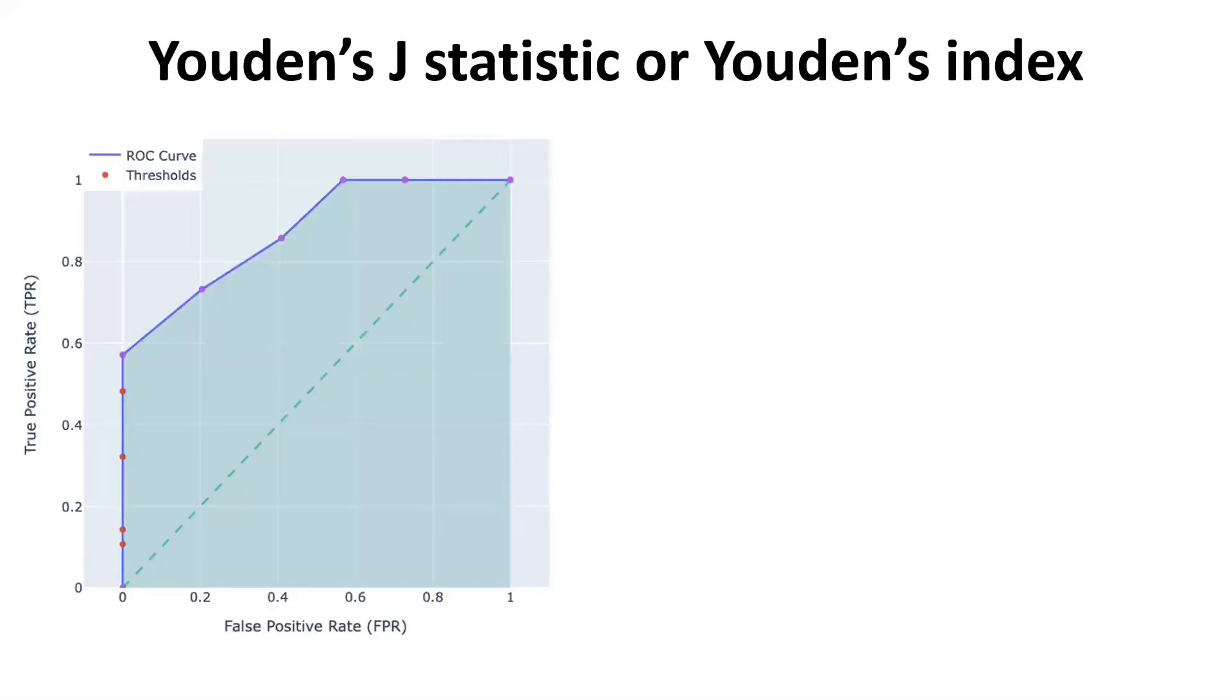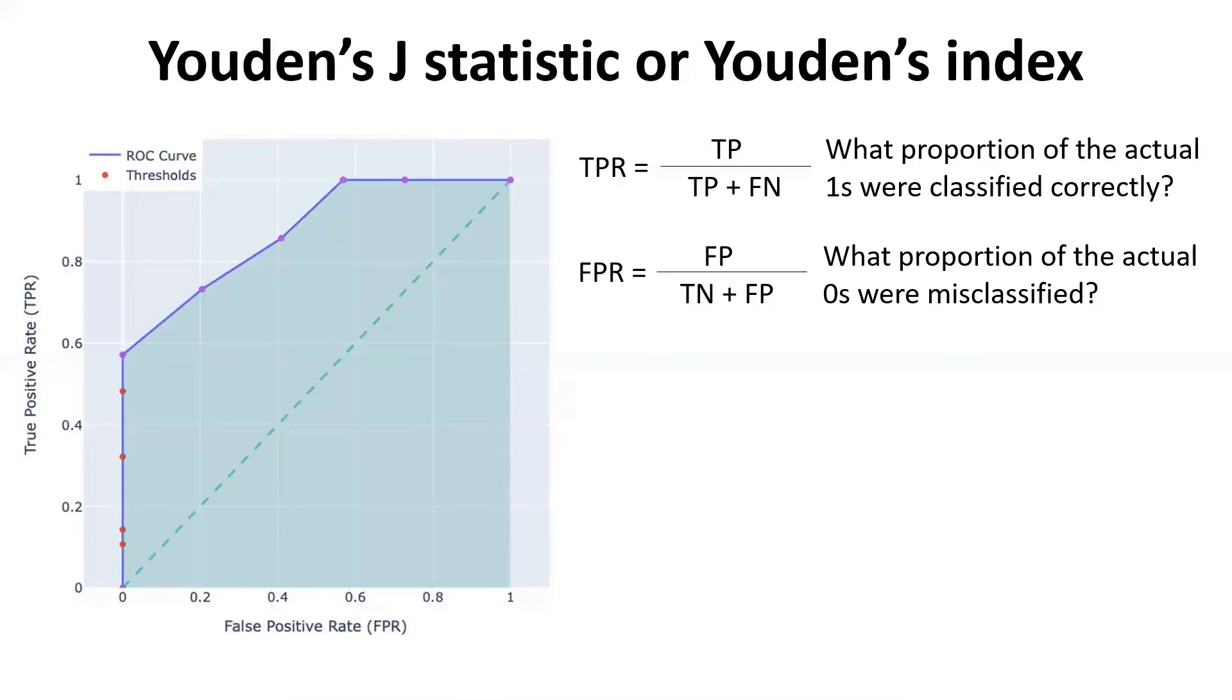Let's see how does it work. We need to do a quick recap of the ROC curve. This ROC curve is basically representing the true positive rate or the recall on the y-axis and the false positive rate or the 1 minus specificity on the x-axis.